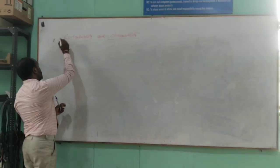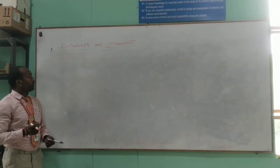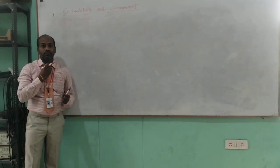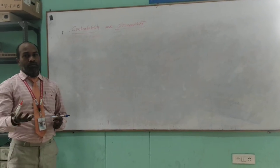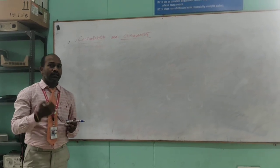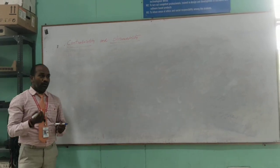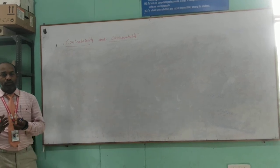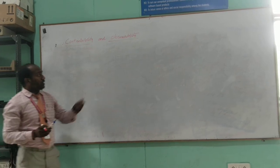Coming to controllability, the definition states that a system is said to be controllable if and only if it is possible to transfer a given system to a desired output with the help of the initial state and within a specified time. If you get the desired output, then the system is said to be controllable. In a single word, getting the desired output by applying the controlled input value is nothing but controllability.